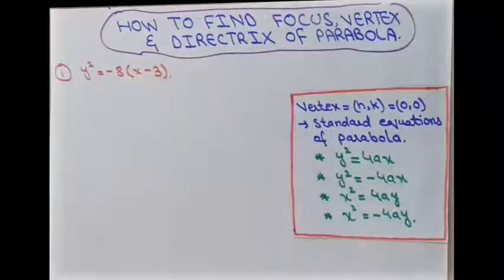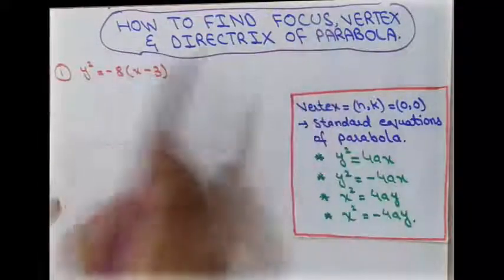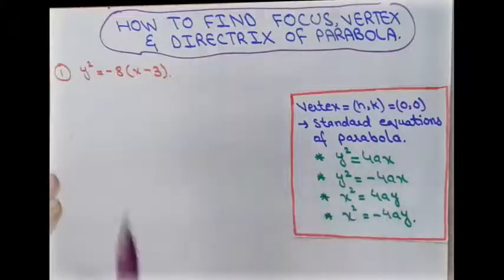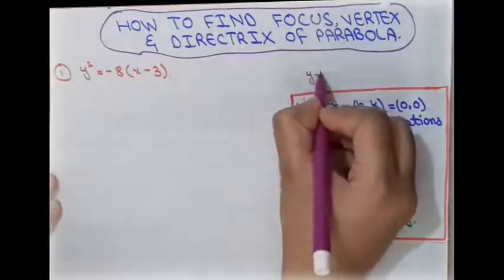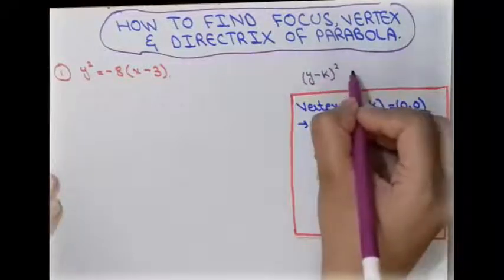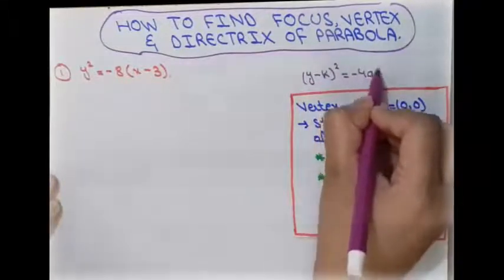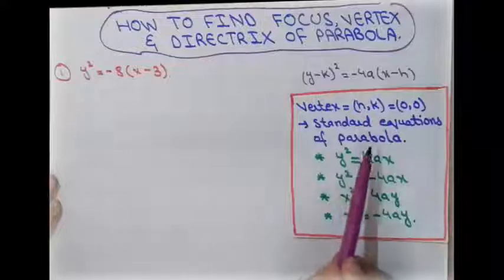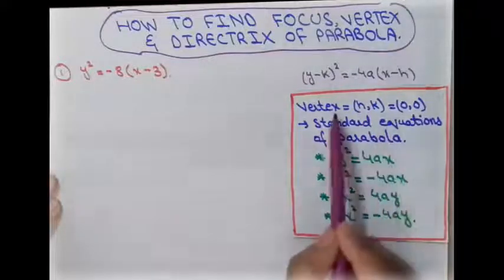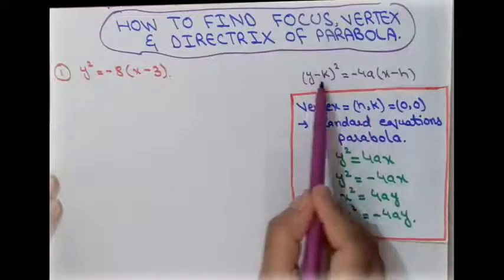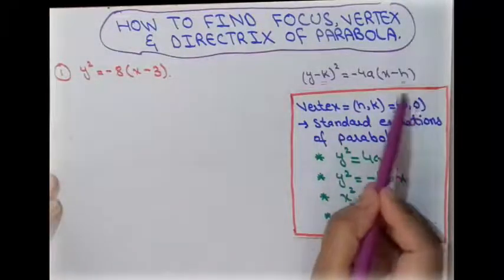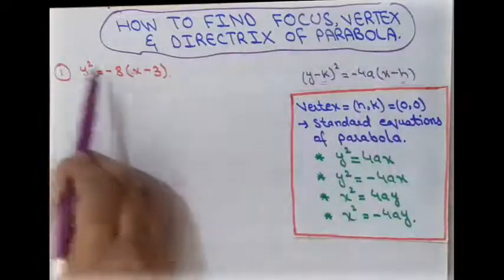Here is the first question: we have to find the focus, vertex, and directrix of an equation of a parabola. Before going to this, recall the standard form we previously discussed: (y − k)² = −4a(x − h), where the vertex is (h, k). In the standard equations of a parabola, the vertex is at the origin, meaning h and k are both zero.